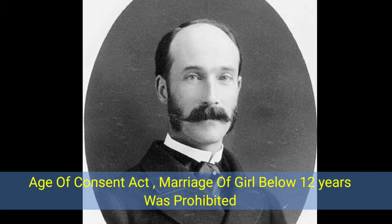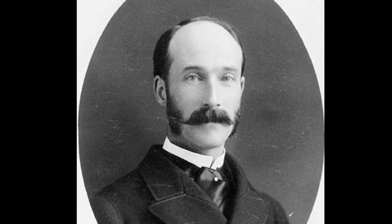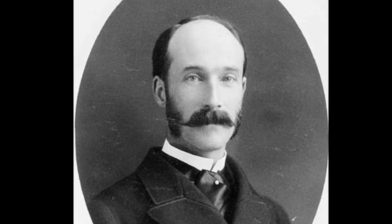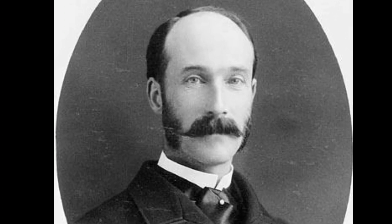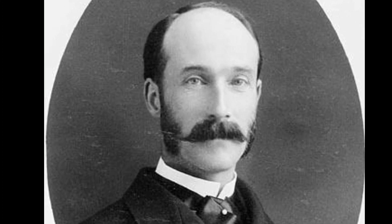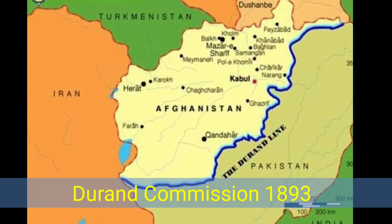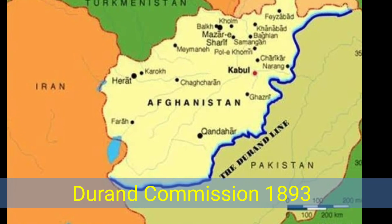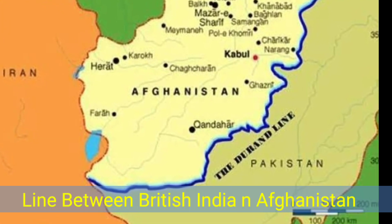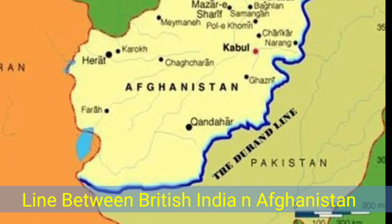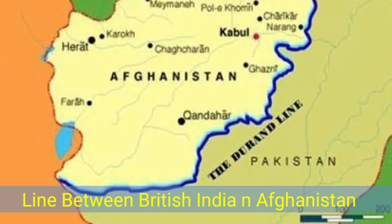In 1891, the Age of Consent Act was passed, under which marriage of a girl below 12 years was prohibited. UPSC might ask whether it was 13 or 10 years — it is 12 years. The Durand Commission was appointed in 1893 to define the line between British India and Afghanistan.